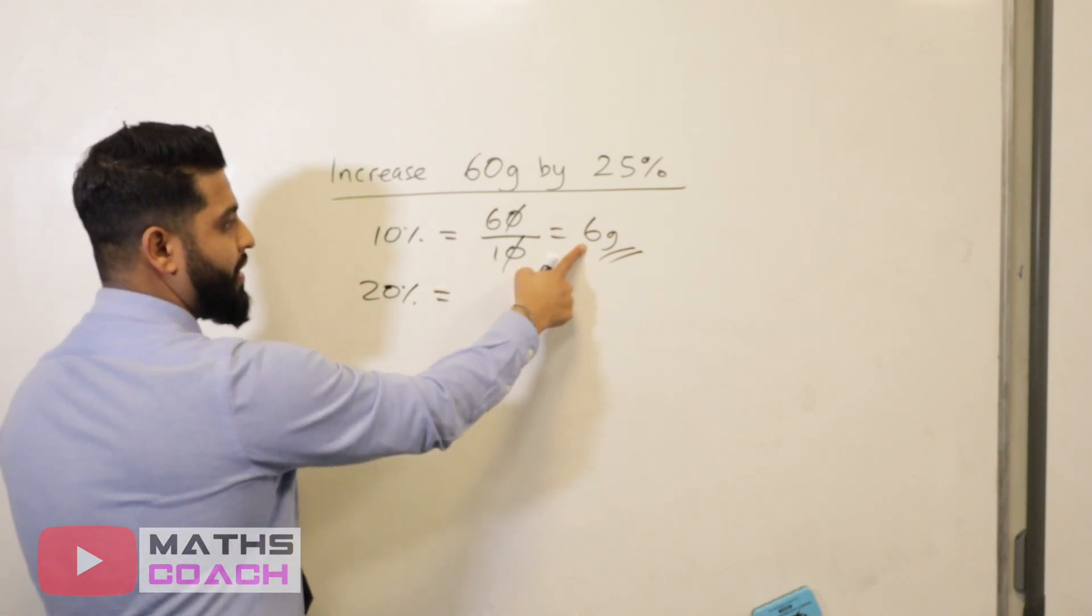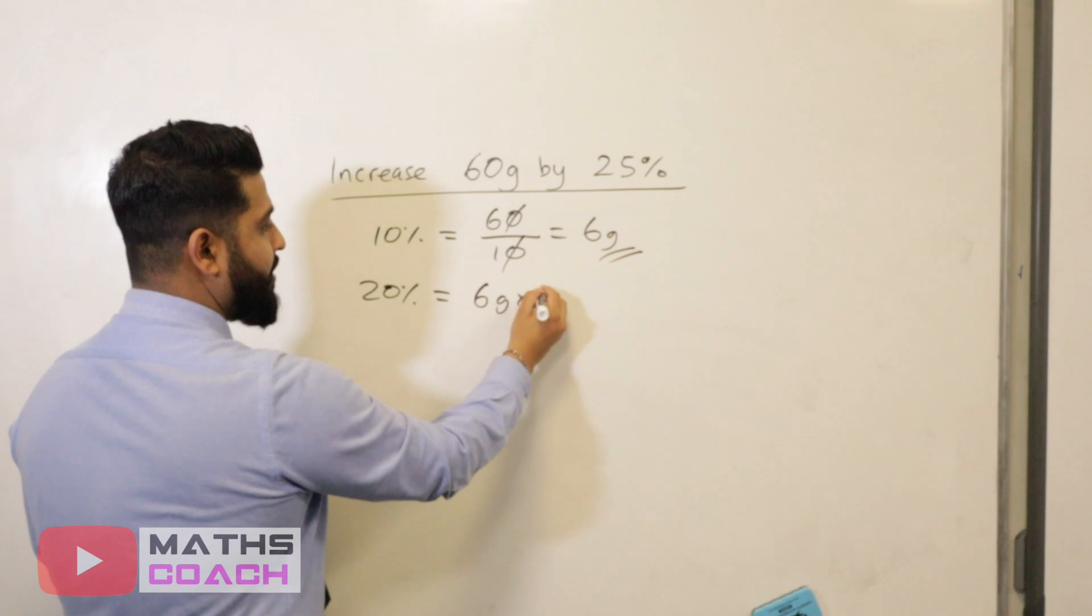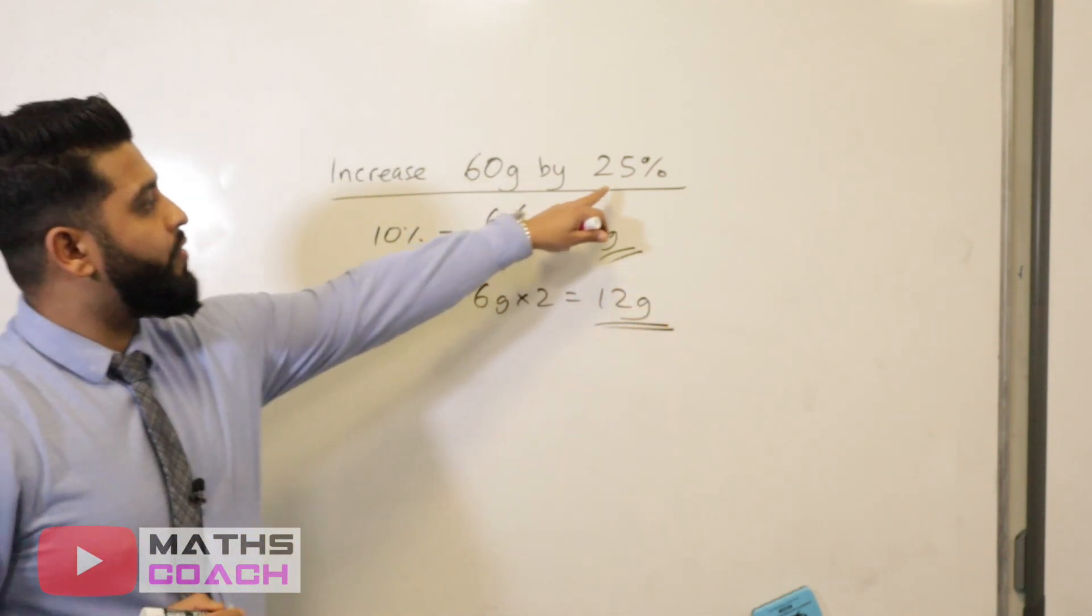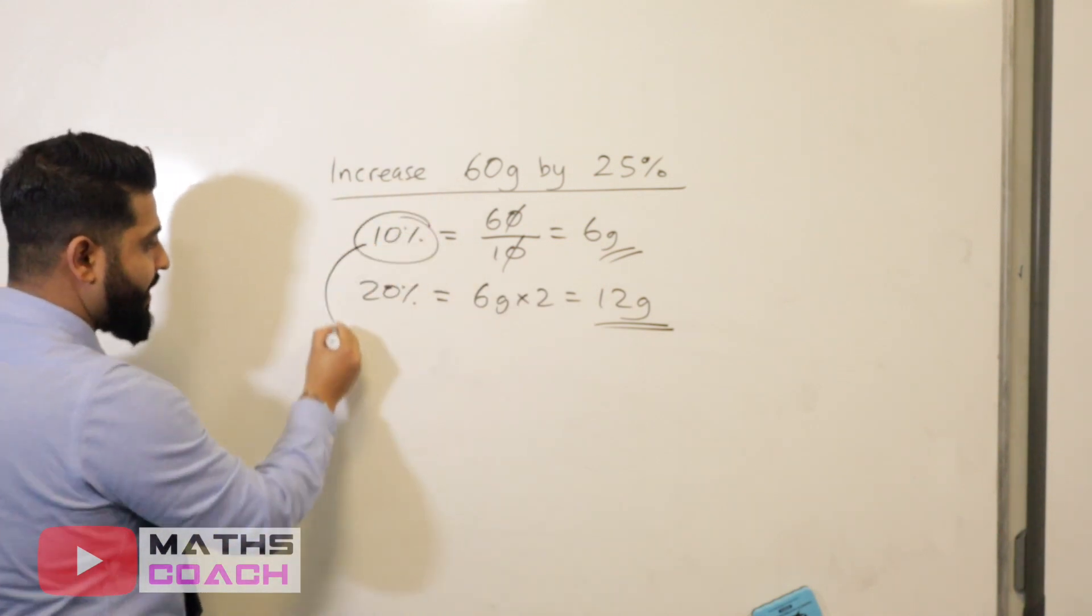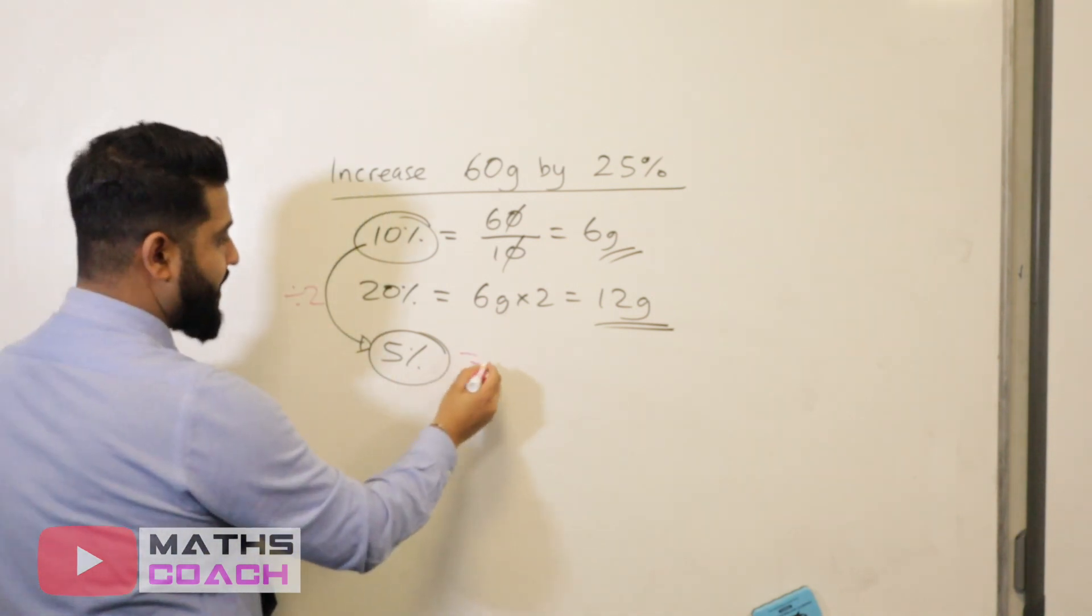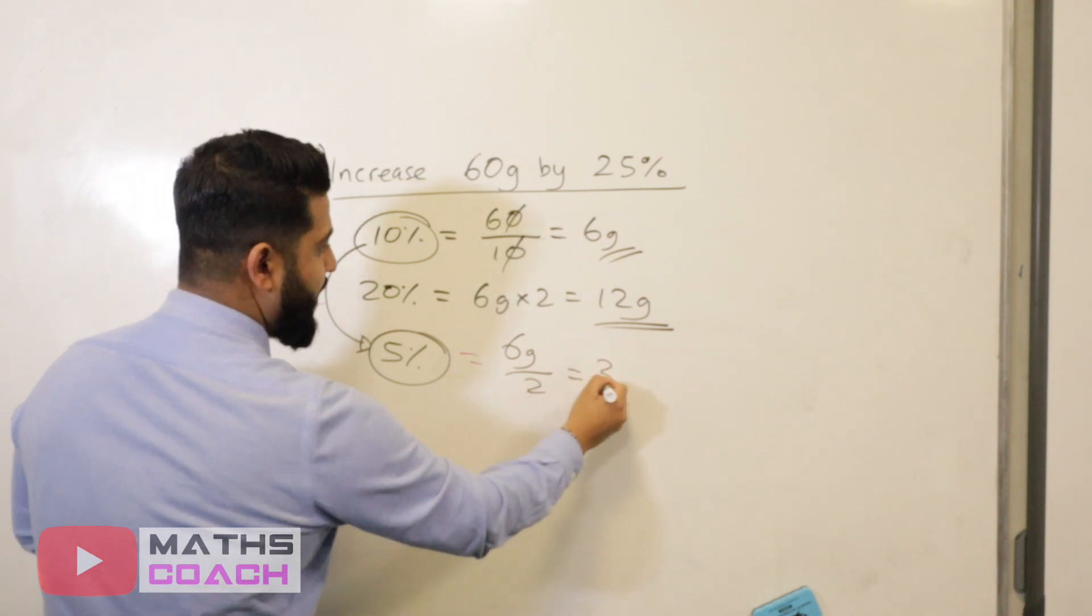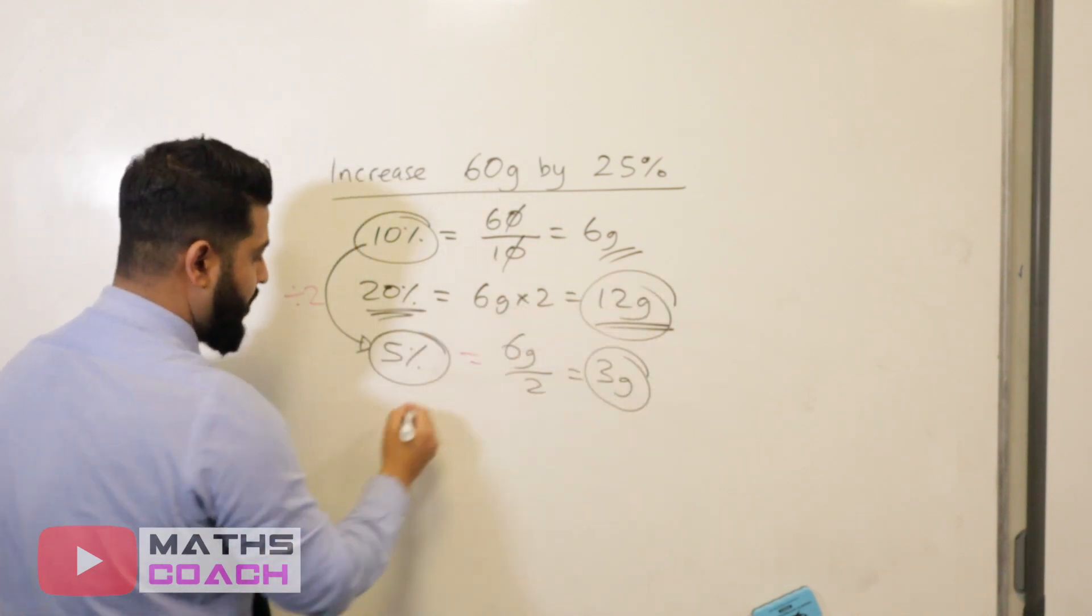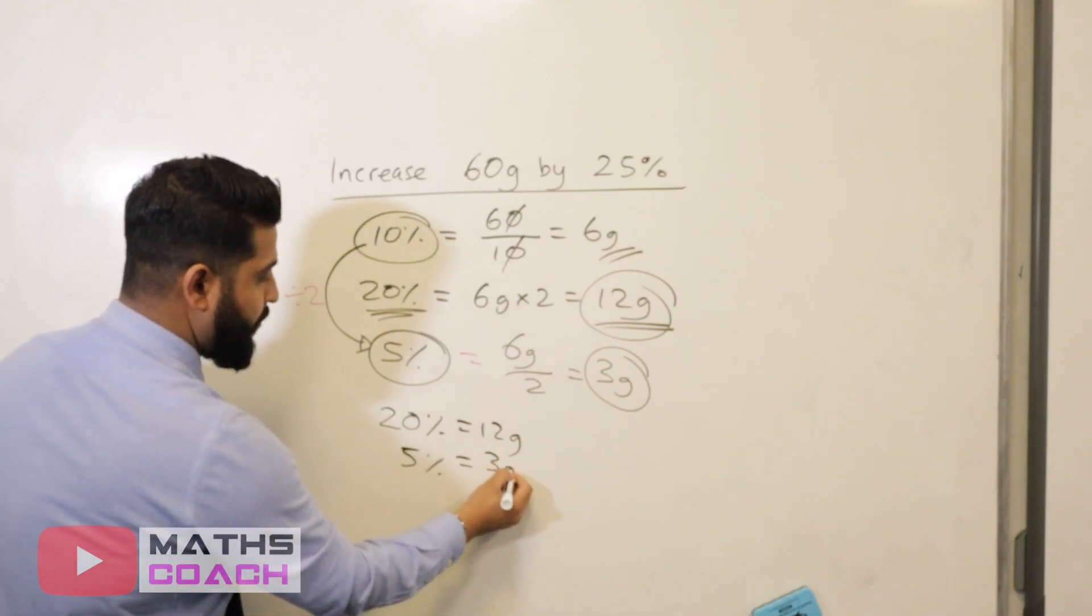20% will be twice that. So therefore 20% will be 6 grams times by 2, which is 12 grams. We still need to find the 5%. Now, like before, we can take the 10% amount and divide it by 2. So what is the 10% amount? It is 6 grams. We divide that by 2, we get 3 grams.